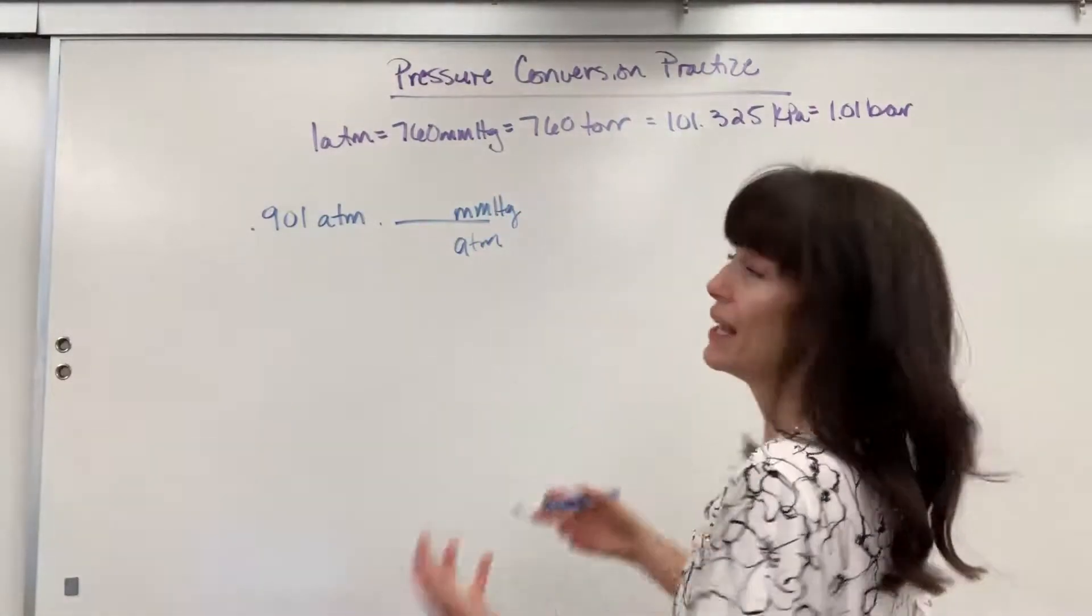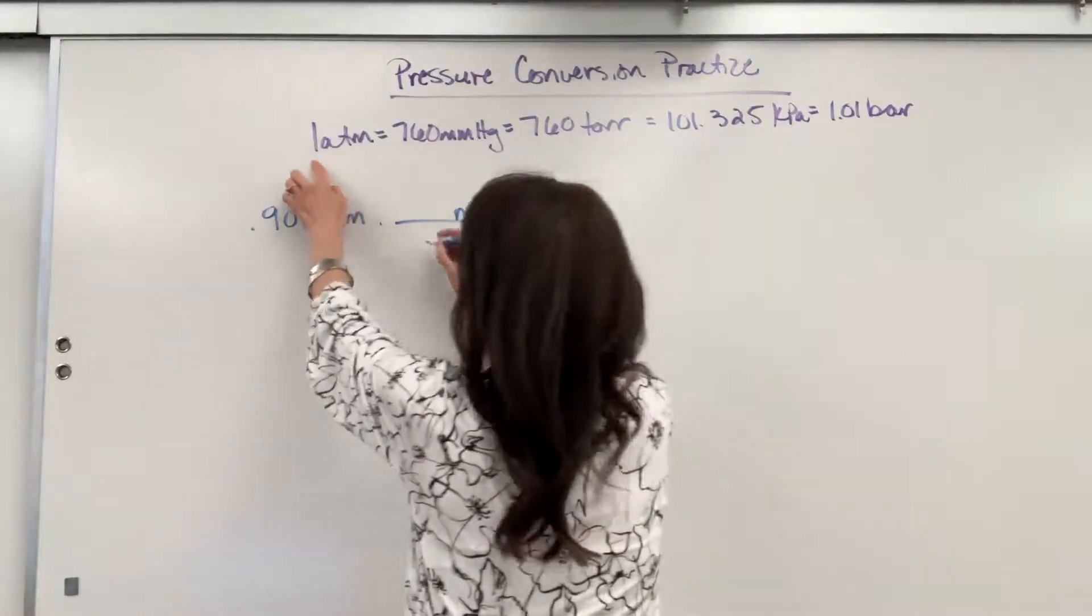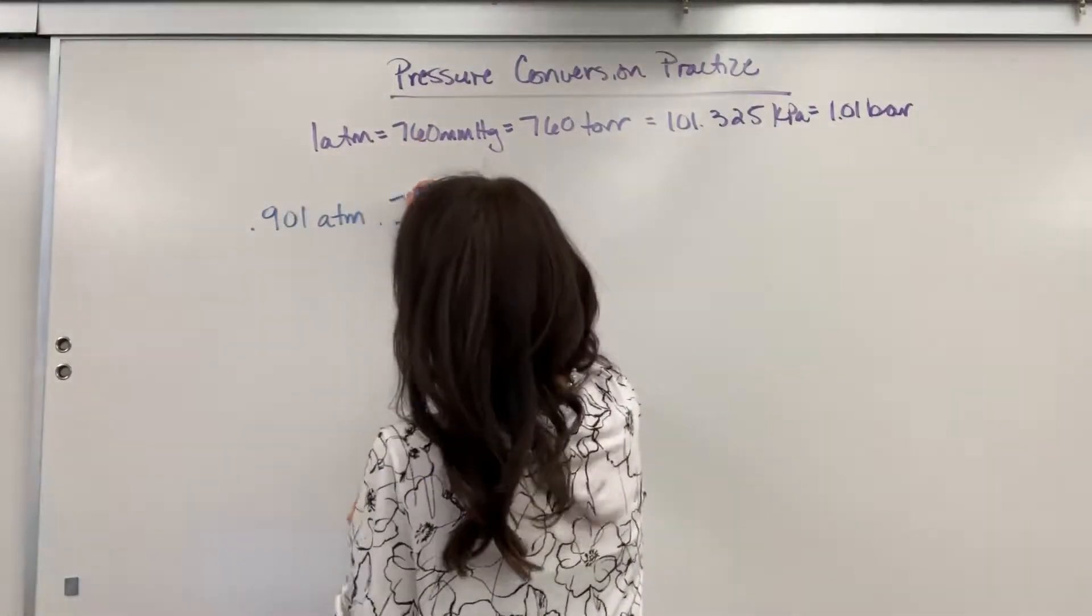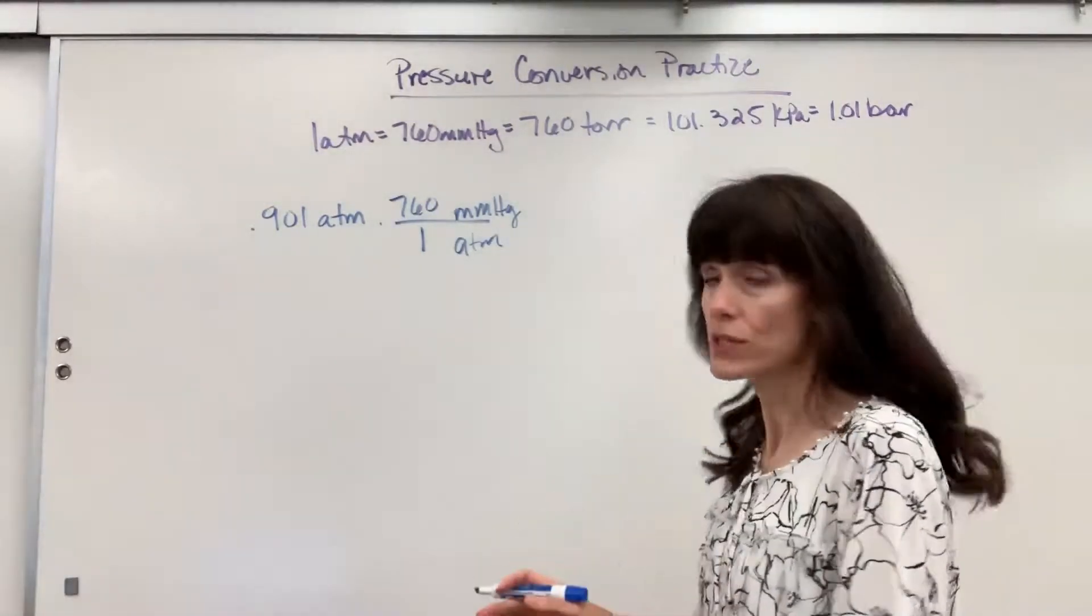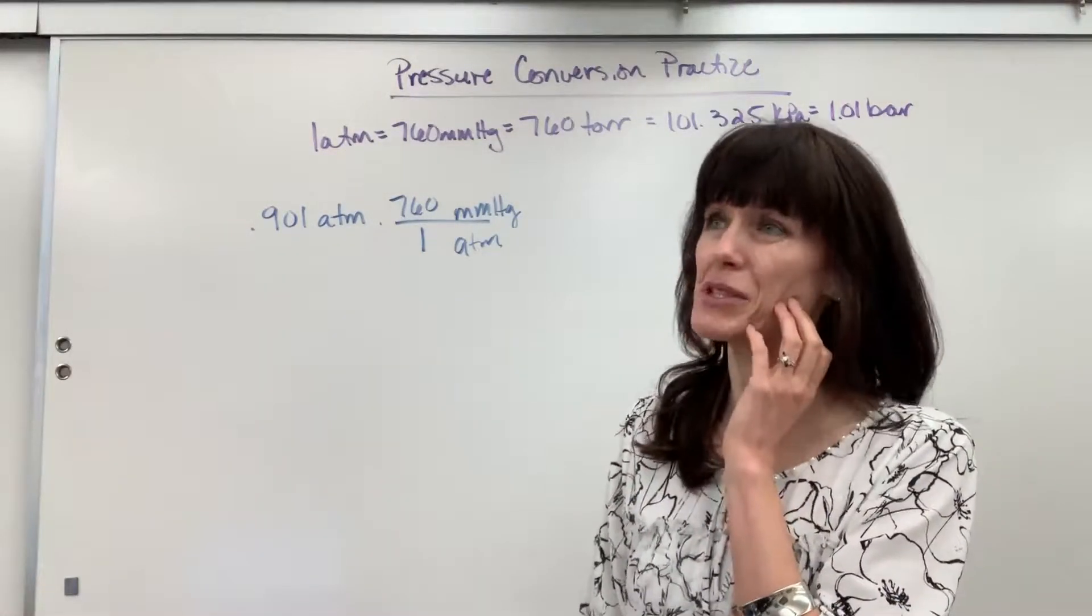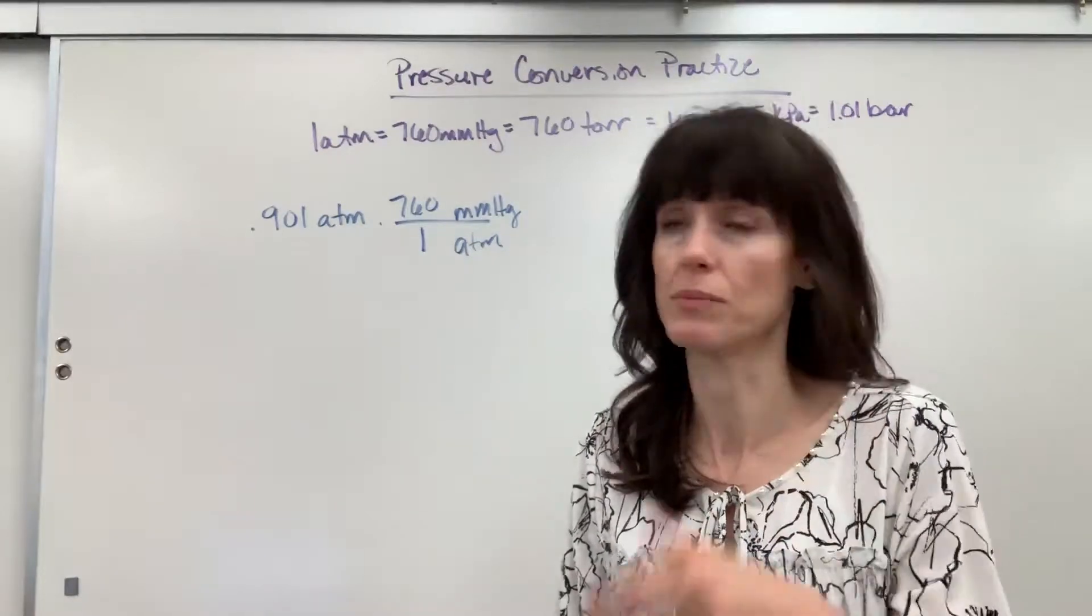I look at my conversion, and I attach numbers. One atm is the same as 760 millimeters of mercury. Always write down your units, and you don't have to think, hmm, am I going from a big number to a small number? Do I divide? Do I multiply?